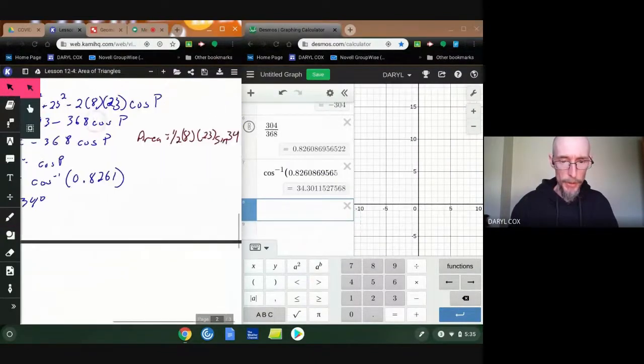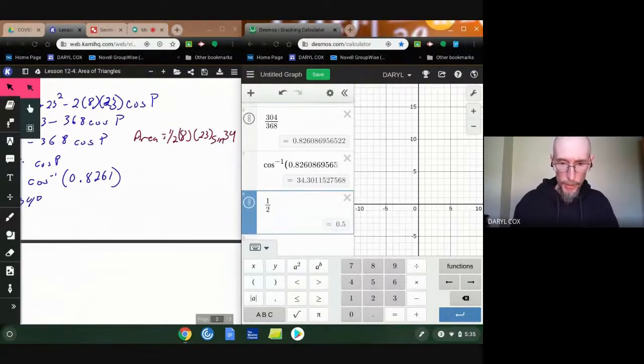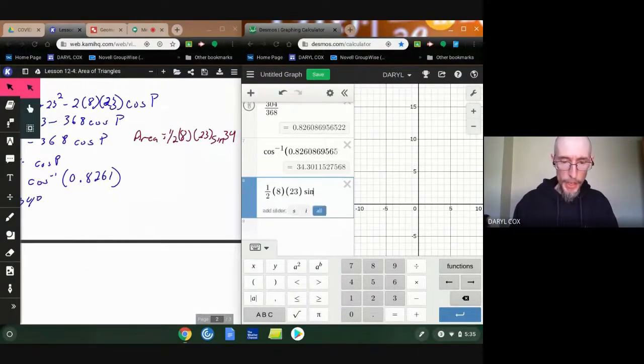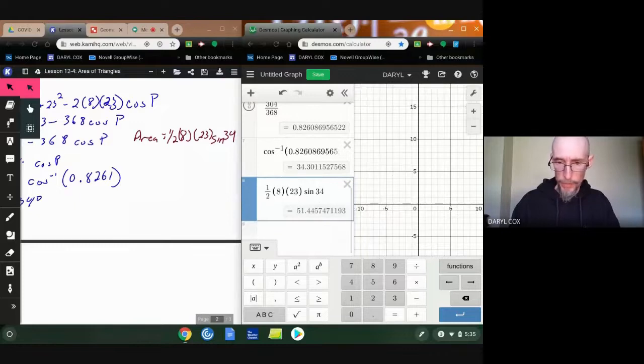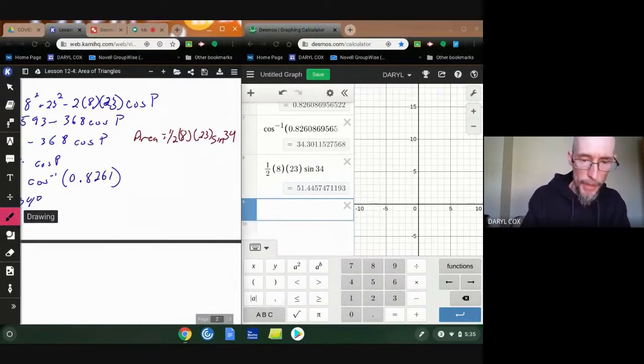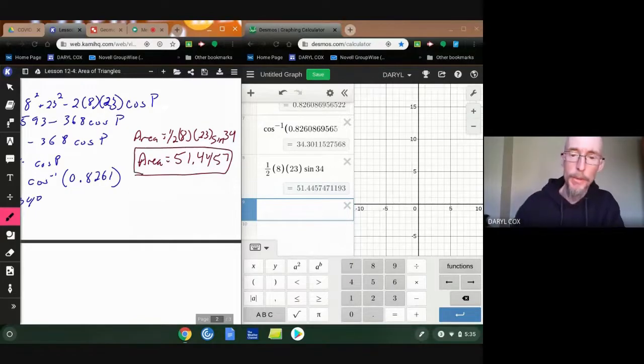And I can punch all of that right into my calculator, okay? So let's punch that into my calculator real quick. Let me see what I wrote over here. So that's going to be one half of... Let's use parentheses. 8, 23, sine of 34. And there we go. So my area equals 51.4457.